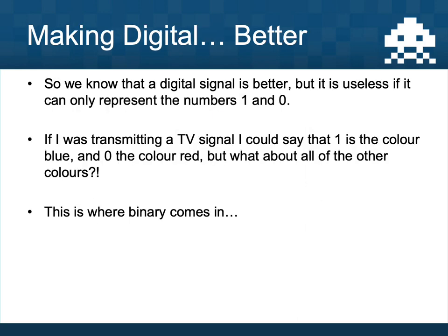A digital signal can only represent the numbers one and zero. If we were transmitting a TV signal, a one could be blue and a zero could be red — but that wouldn't make a very good TV picture if all our TV shows were made up of just blues and reds. This is where the idea of binary comes in, and this is the last part we're going to look at in this computer systems unit.